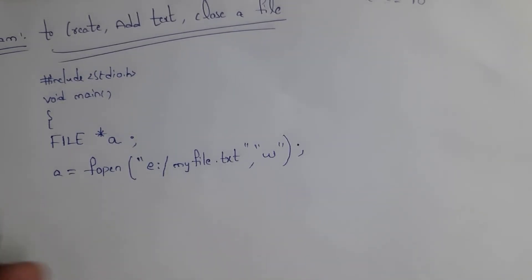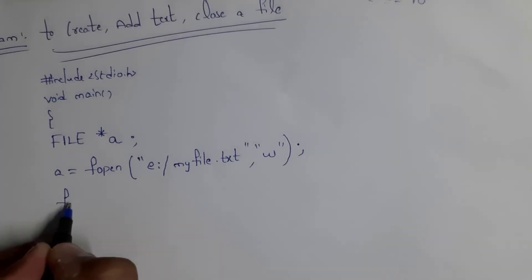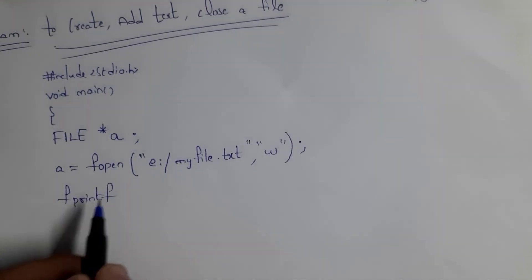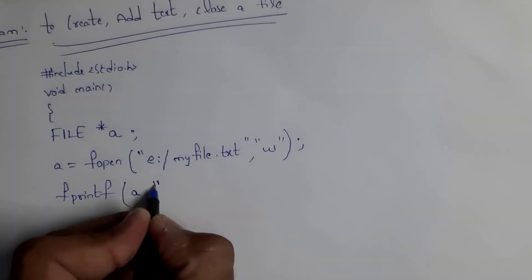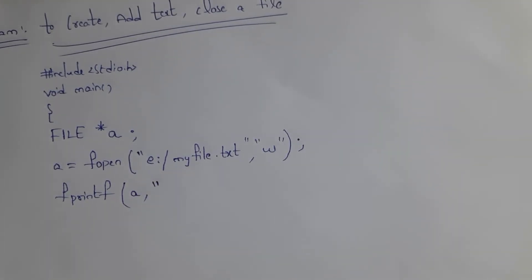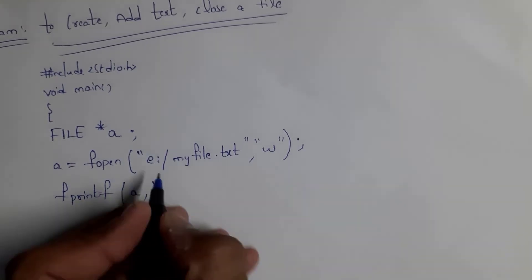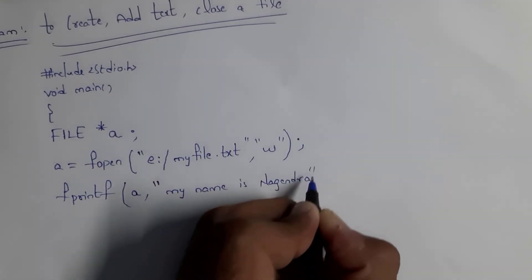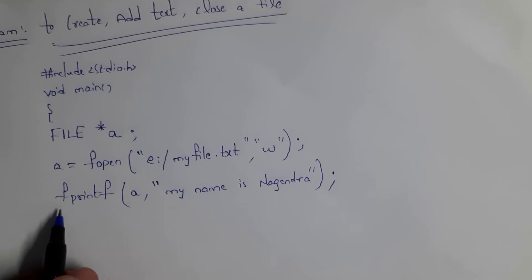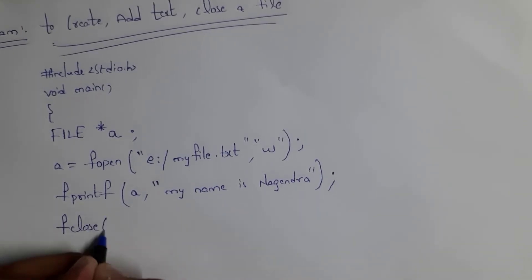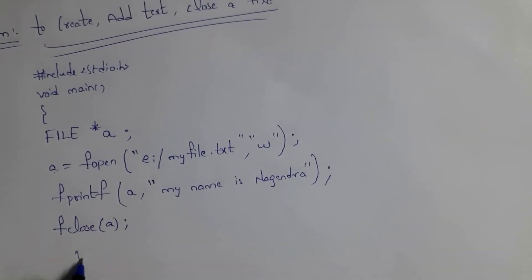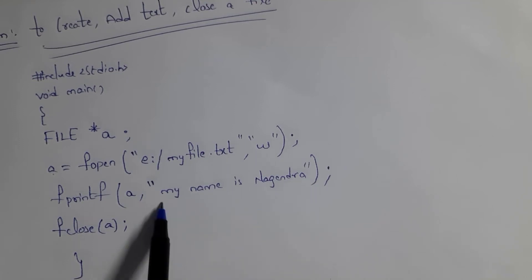Now I want to add information to this file, so I use fprintf. Open bracket, write A (the file address), then a comma, open double quotes, and type the text — I want to add 'my name is Nagendra'. Close the double quotes, bracket, and semicolon. Using fprintf adds information to the file. To close the file, write fclose(A) and semicolon. This is how you create a file, add text to it, and close it.